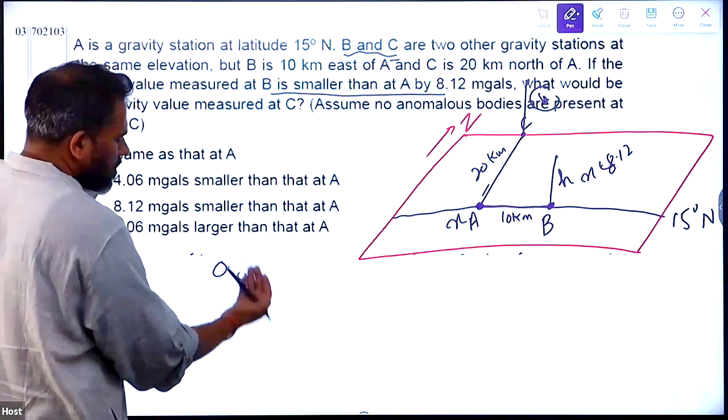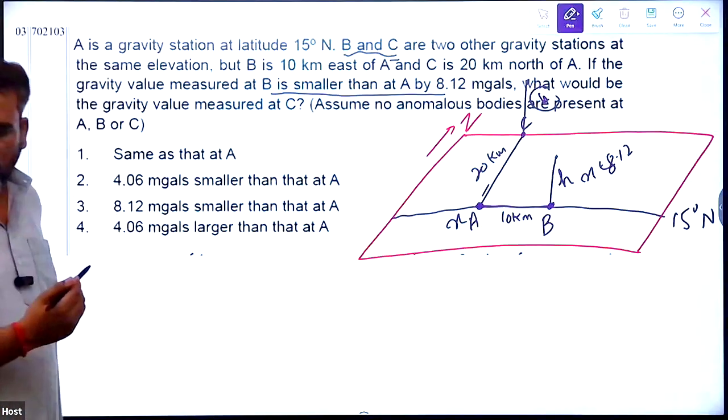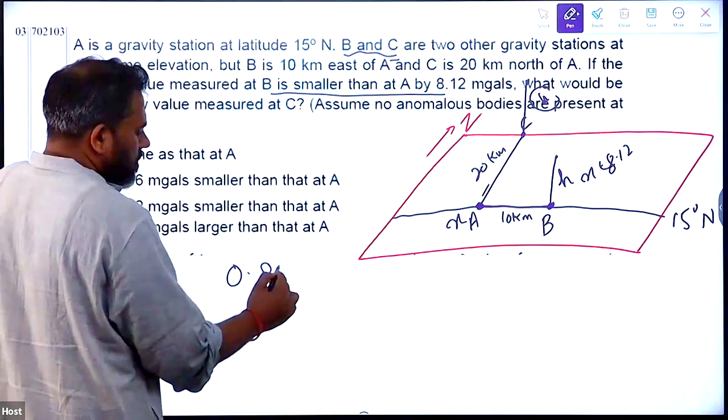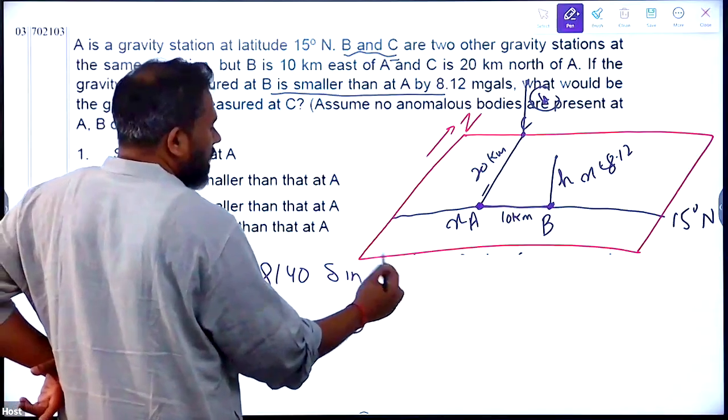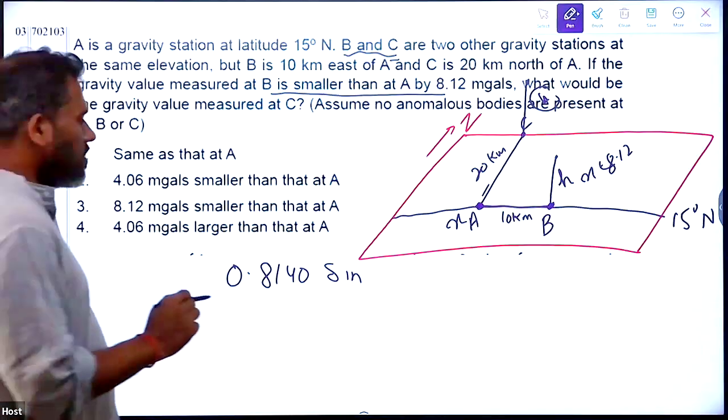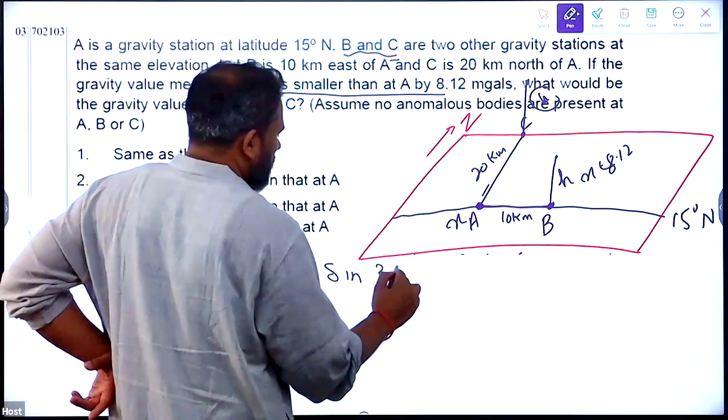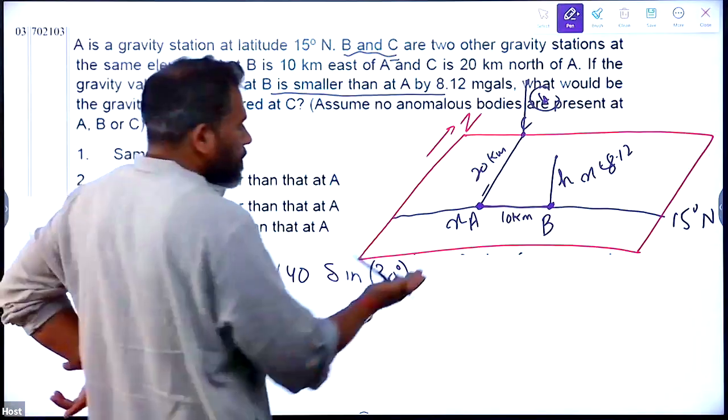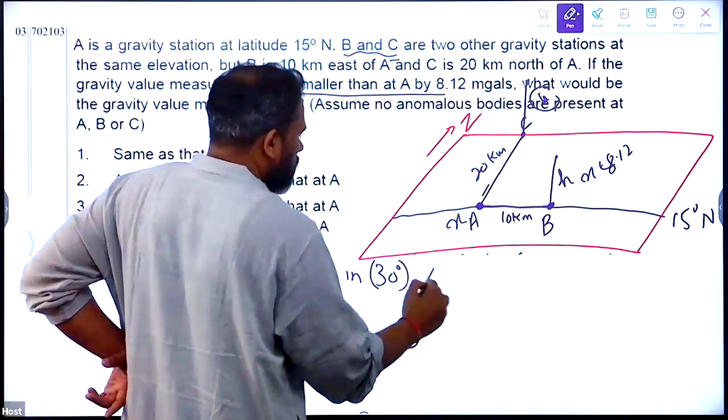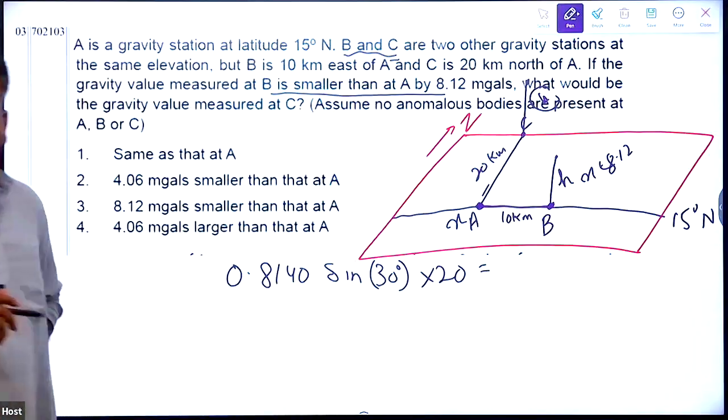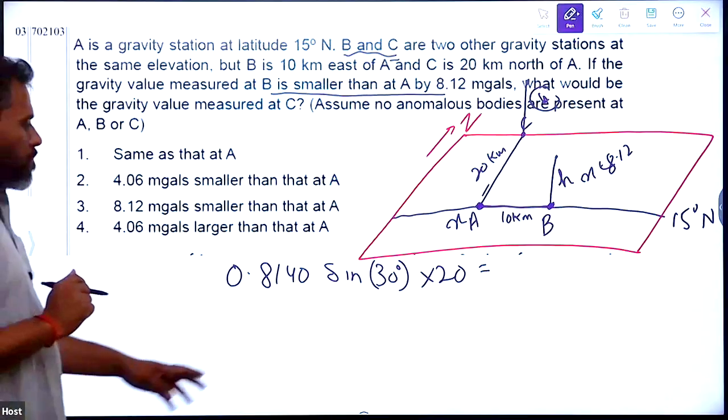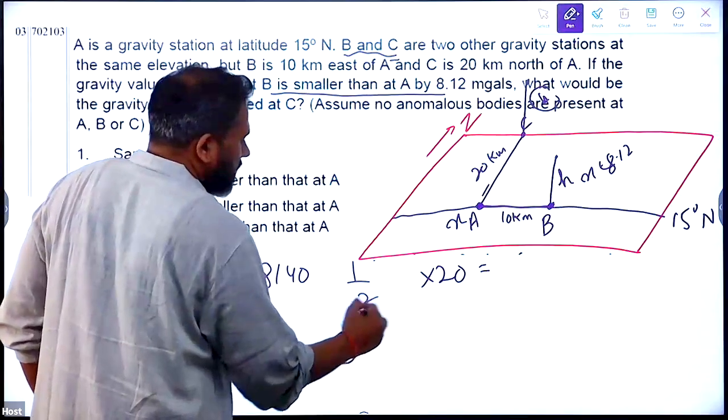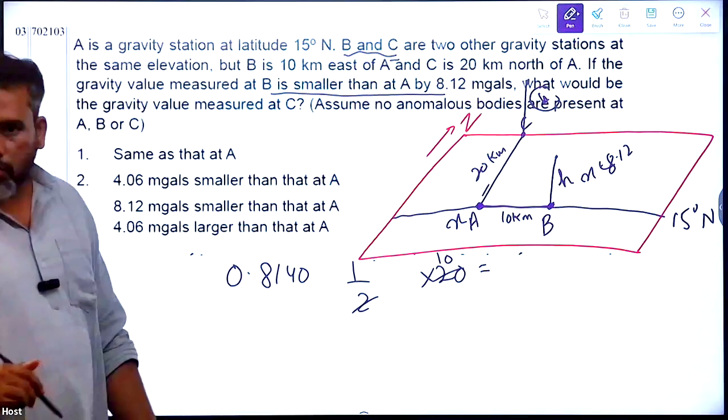0.81 sin 2λ. λ is 15 so sin 30 degrees. This is milligals per kilometer so how many kilometers you are going? 20, so into 20. This will be your total latitude correction. Sin 30 is half, so if you write half this becomes 10, so this is 8.14 milligals.